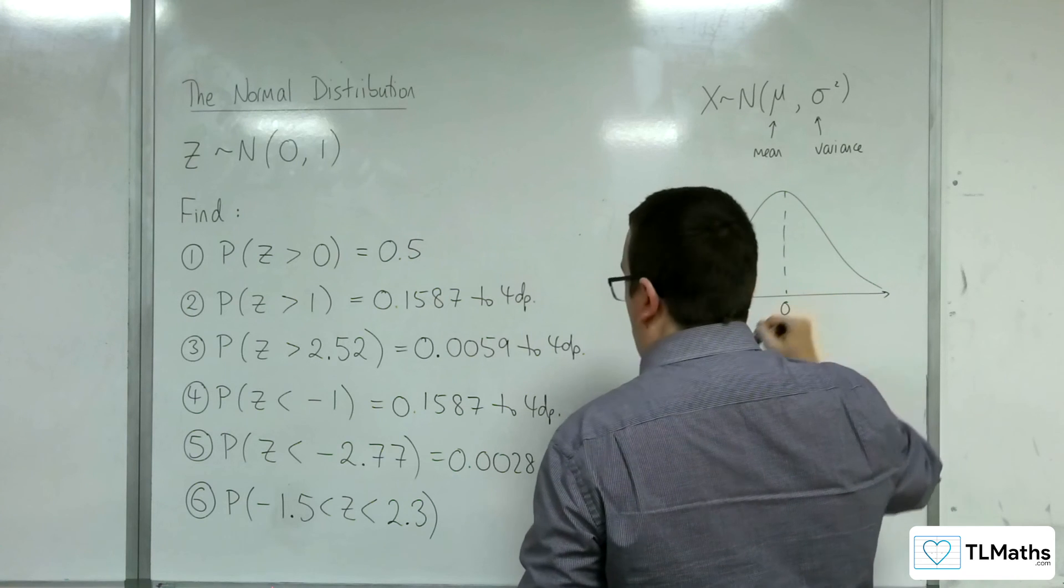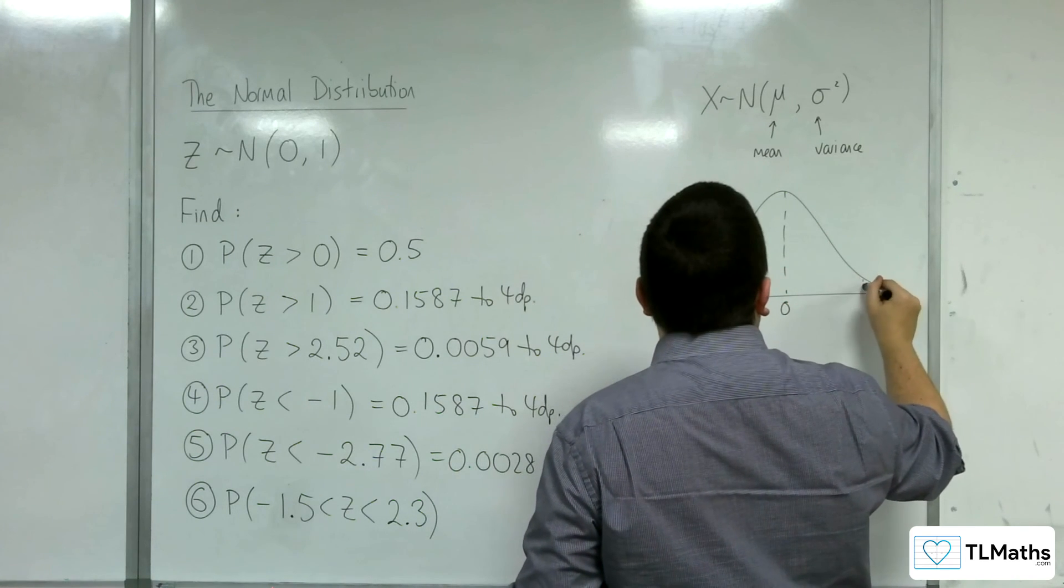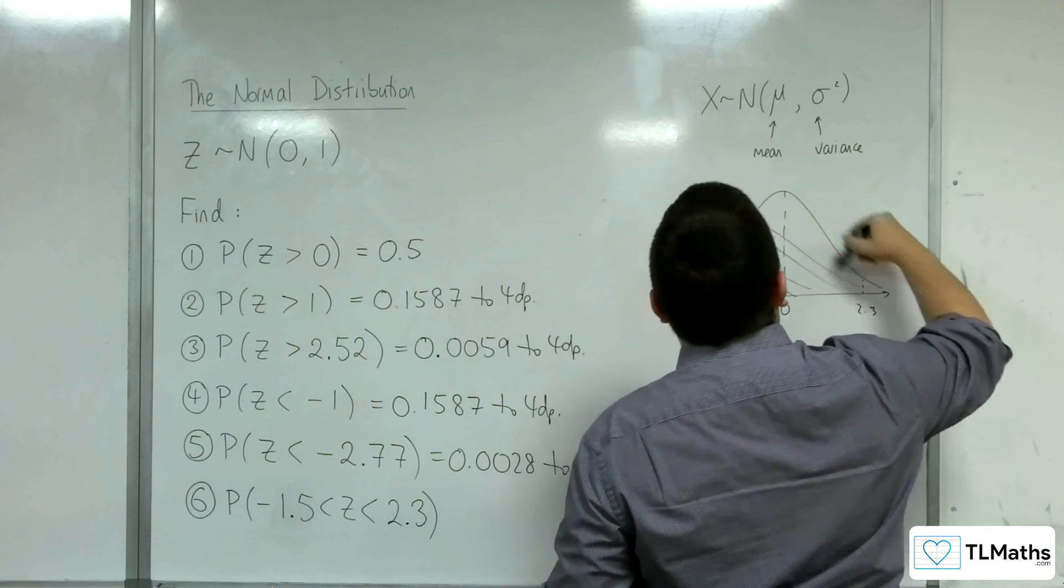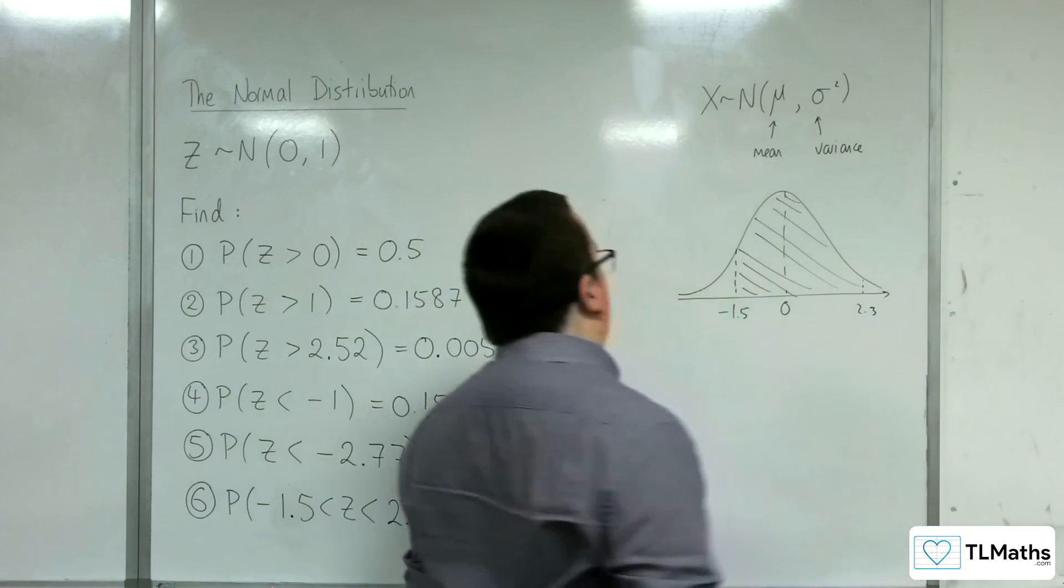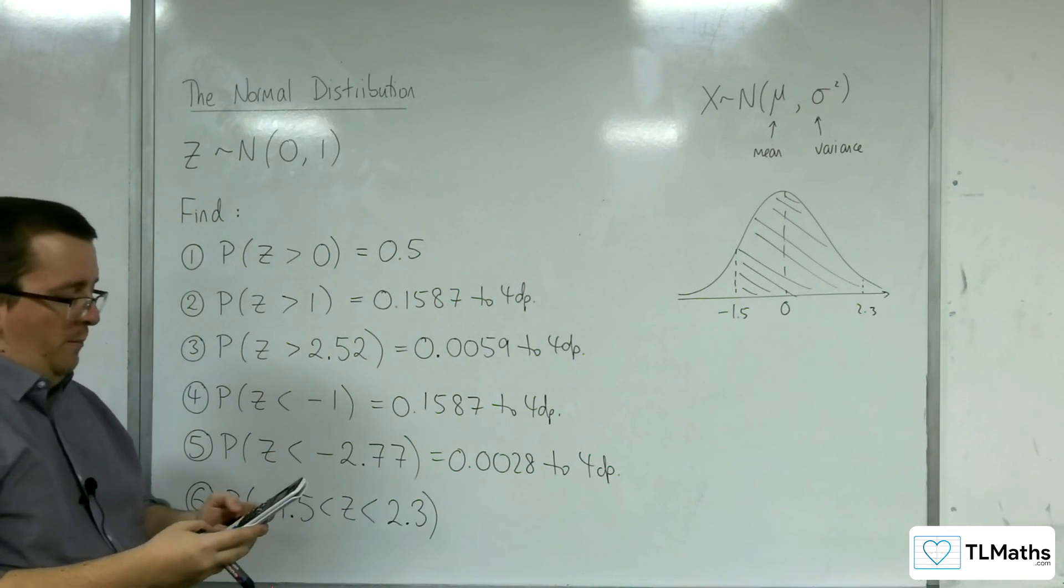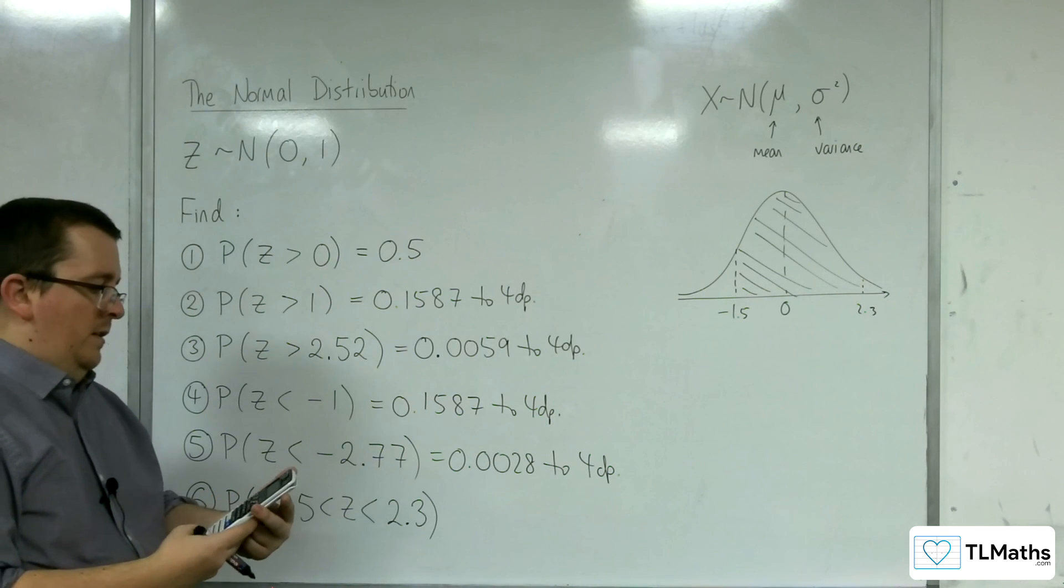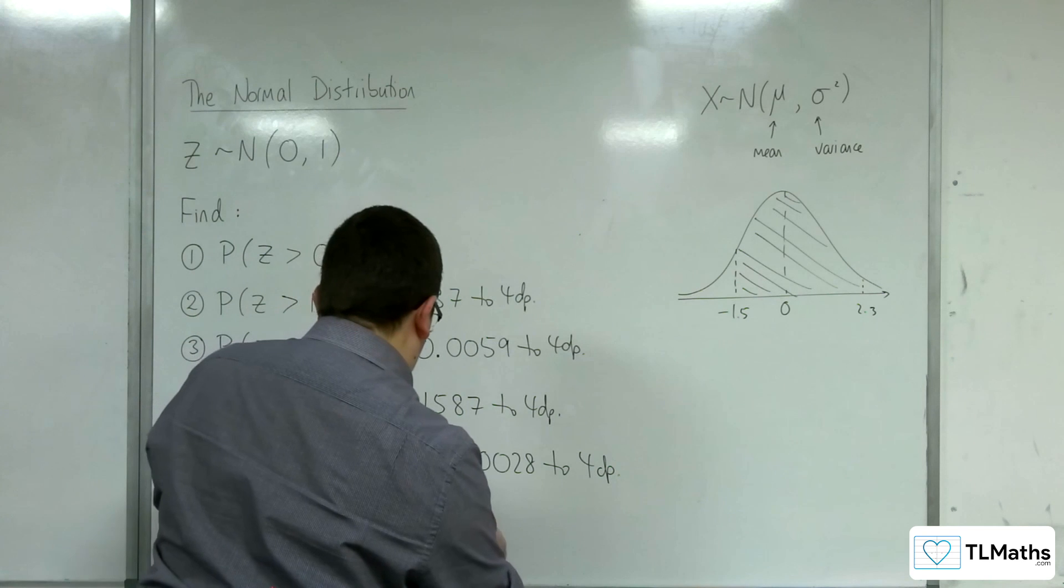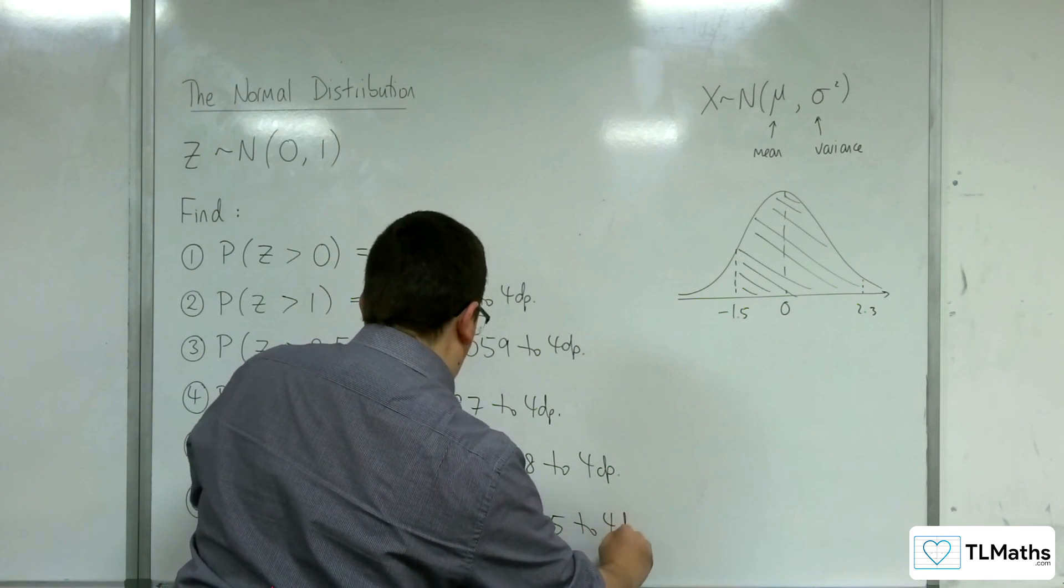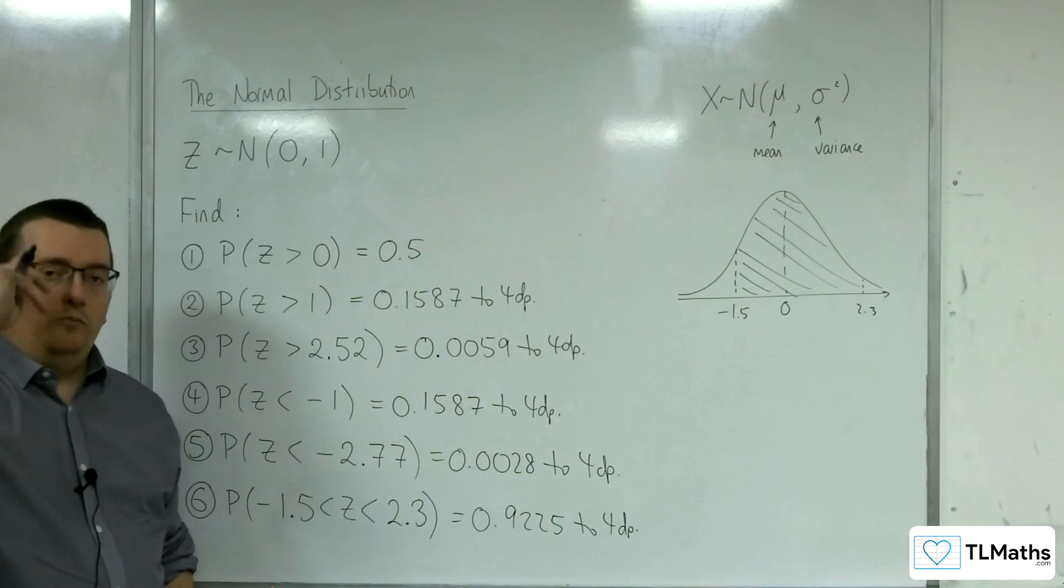So the last problem is minus 1.5 to 2.3. Remember, it's just a diagram to help you visualize it. Press equals again. The lower value this time is minus 1.5. The upper value is 2.3. Press equals. We get 0.9225 to 4 decimal places. And so that's how we can find all those probabilities.